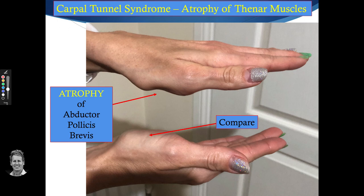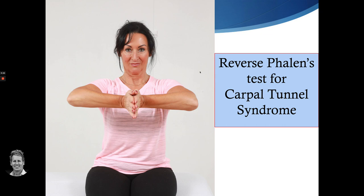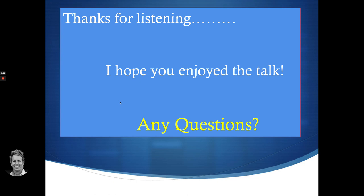A couple of tests you can perform: the first is the standard Phalen's test, named after George S. Phalen. You place the backs of the hands together for about 30 seconds to see if symptoms are reproduced. You can also do the reverse Phalen's test, placing the palm surfaces together. Both are useful for testing whether carpal tunnel symptoms are provoked.